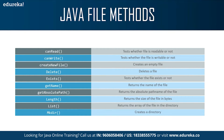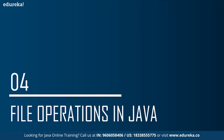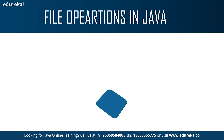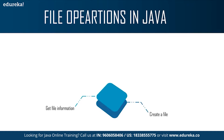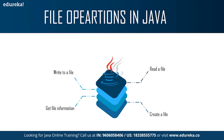These methods are used to perform various file operations. Now let's see what the various file operations are in Java. First you need to create a file. Then once you create a file, you need to get the information out of the file. After that you have to write the information to the file, and then you have to read the data from the file.